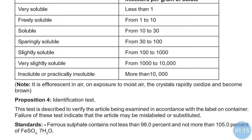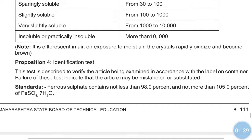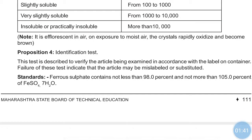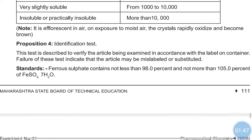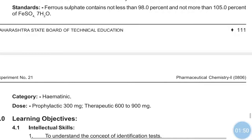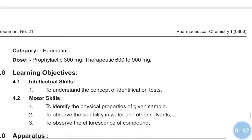An important note is that ferrous sulfate is efflorescent in air — meaning it loses water molecules from the crystallized substance on exposure to moist air. The crystals rapidly oxidize and become brown in color. Regarding standards, this ferrous sulfate contains not less than 98% and not more than 105% of FeSO4·7H2O.